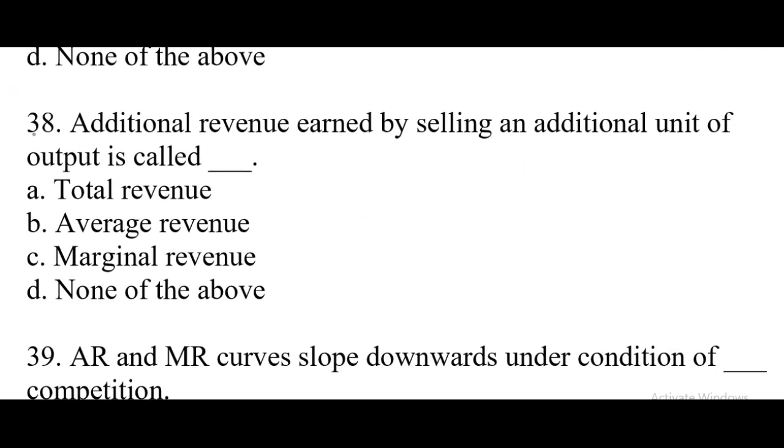Question number 38: Additional revenue earned by selling an additional unit of output is called. Right answer option C, marginal revenue.